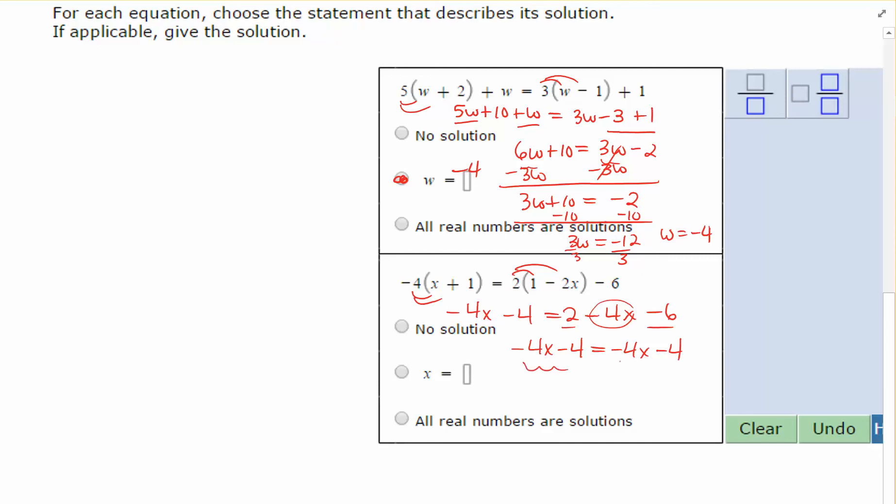Now if you look at this equation, it's the same thing on both sides. You have negative 4X and negative 4X, minus 4, minus 4. When it matches on both sides like that, you can plug in any number for X, and the equation will always balance. So this is infinite solutions, or all real numbers will work.